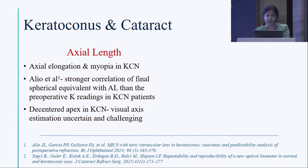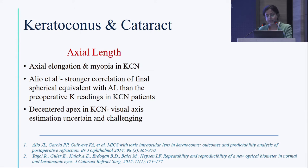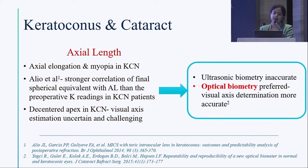Regarding axial length, keratoconus is associated with axial elongation and myopia. The axial length has a stronger correlation with the final spherical equivalent than the preoperative K readings in keratoconus patients — so it is more important than keratometry, not less. A decentered apex in keratoconus means visual axis estimation may be uncertain. Ultrasonic biometry is often inaccurate; optical biometry is the preferred modality as visual axis determination is more accurate.